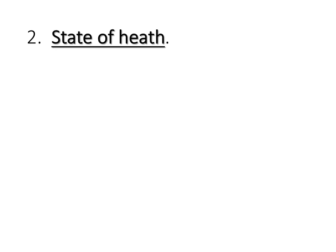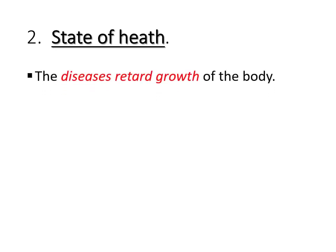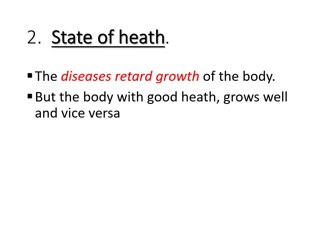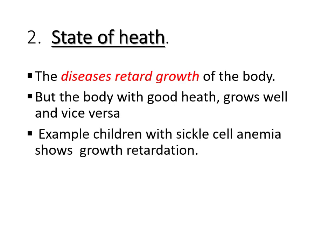The second internal factor is the state of health. Disease retards the growth of the body because it hinders the normal function of the body. So once a person gets sick, there is no normal function, and the process of growth slows. When the body has good health, it grows well, and when the body has disease, it does not grow well. For example, children with sickle cell anemia always present with growth retardation because sickle cell anemia hinders the normal growth process of the body.